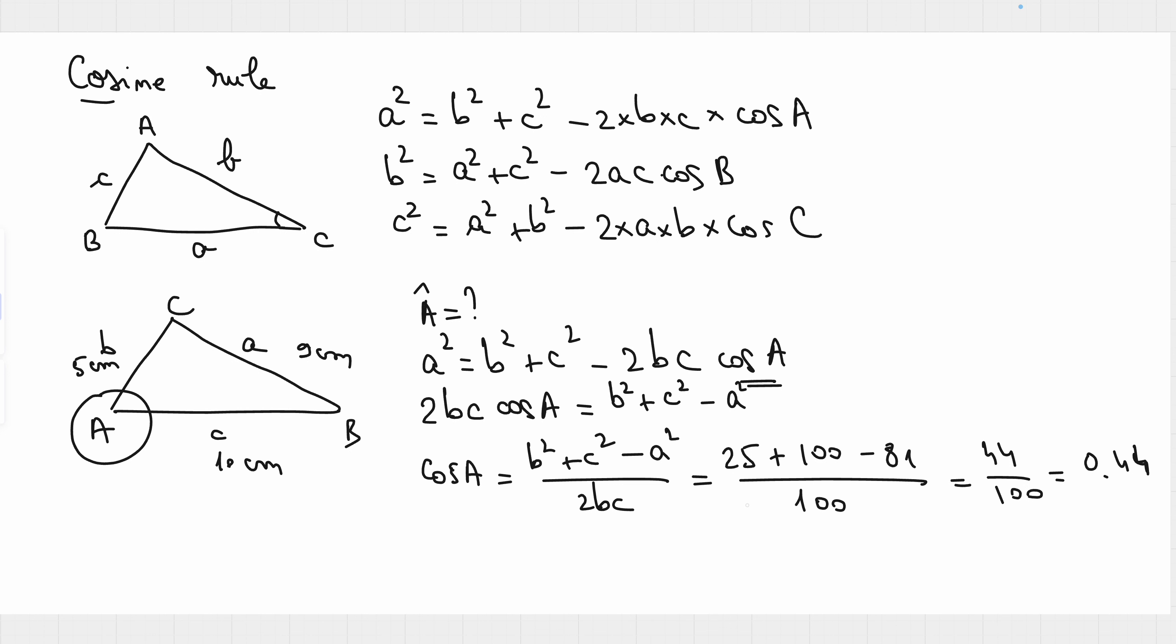But we want the angle, not cosine of the angle. So, in order to find it, it's very easy. It's applying the inverse function. So, cosine power minus 1 of this value, 0.44. And the answer is 63.9 degrees, because the question was to find the size of angle A to 1 decimal place. And we have 1 decimal place over here.